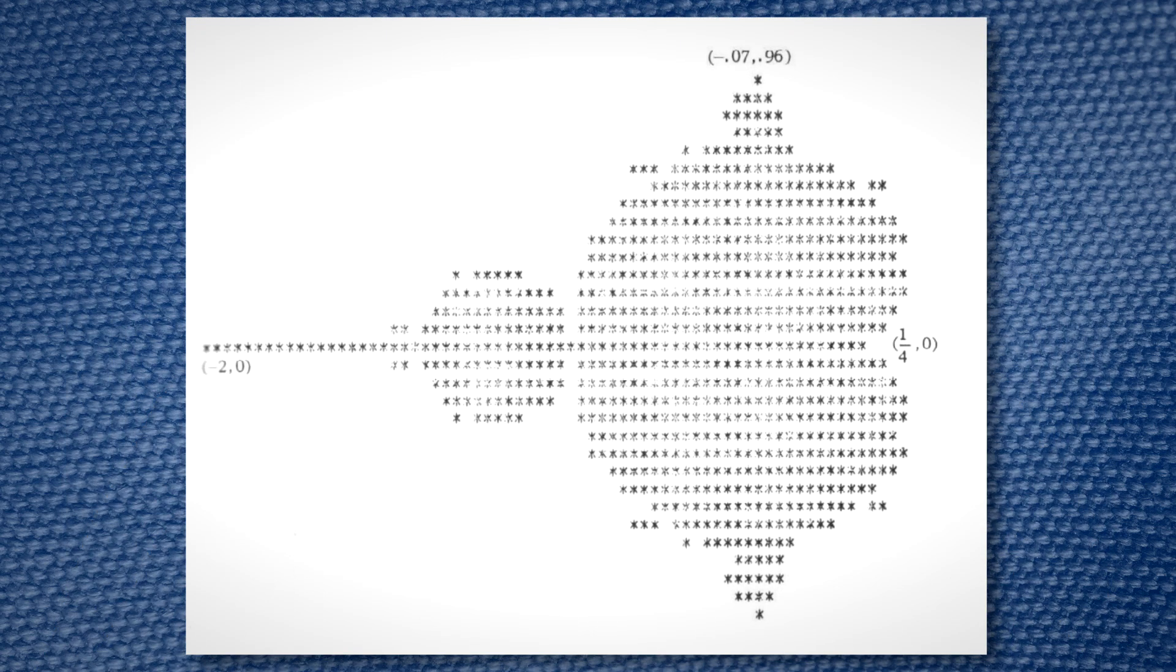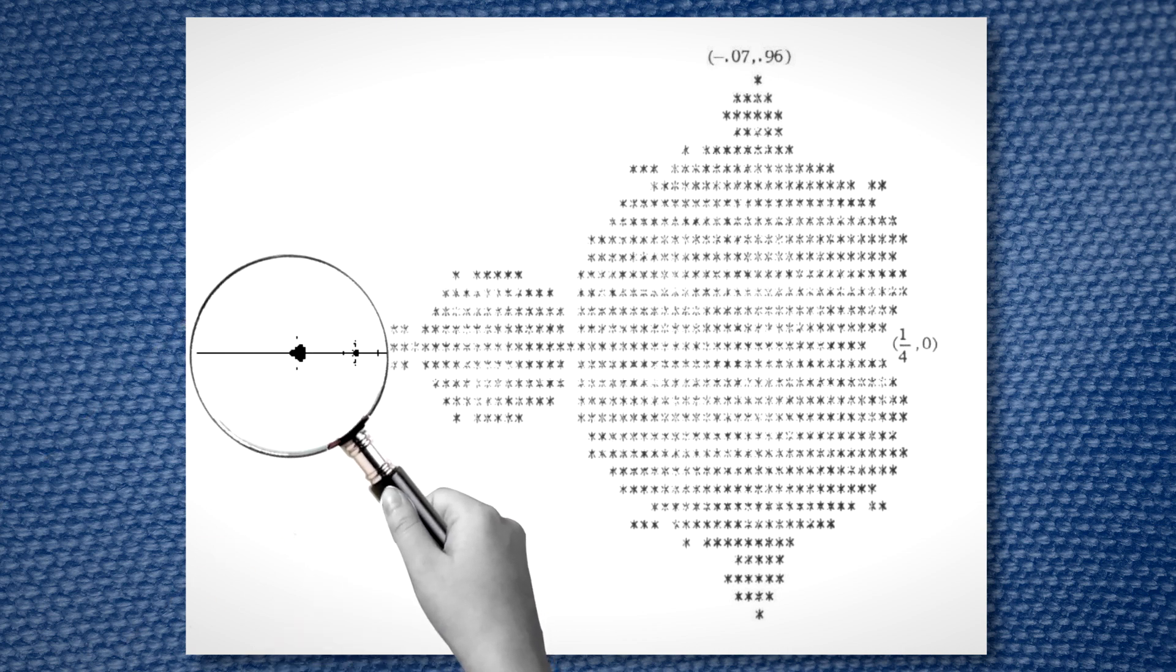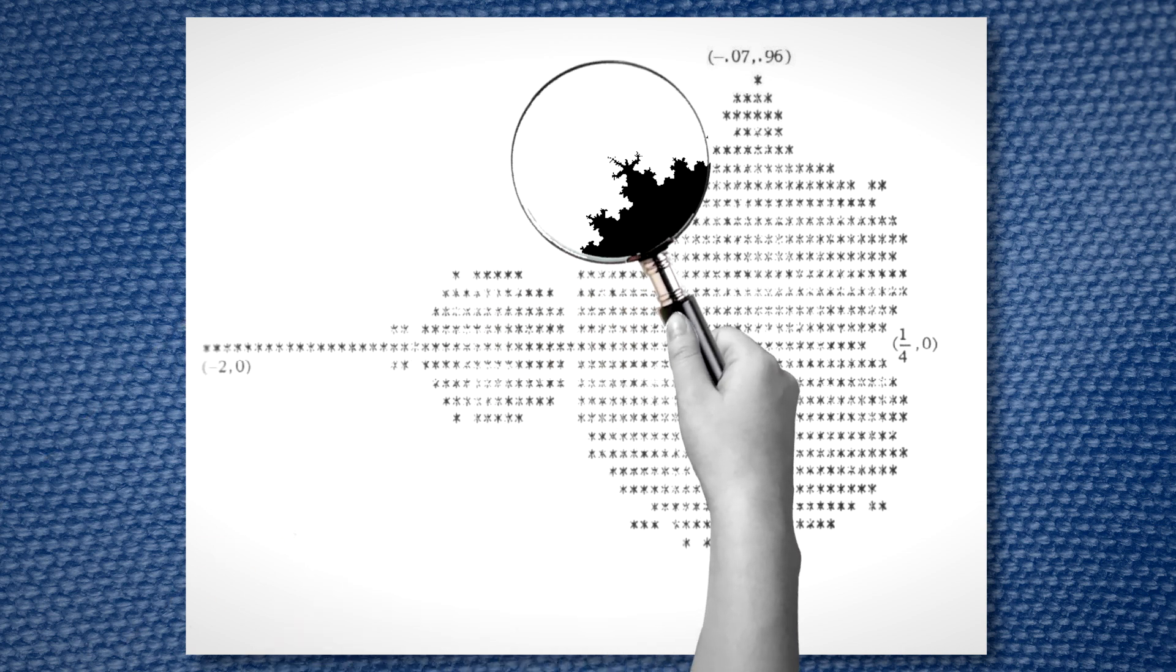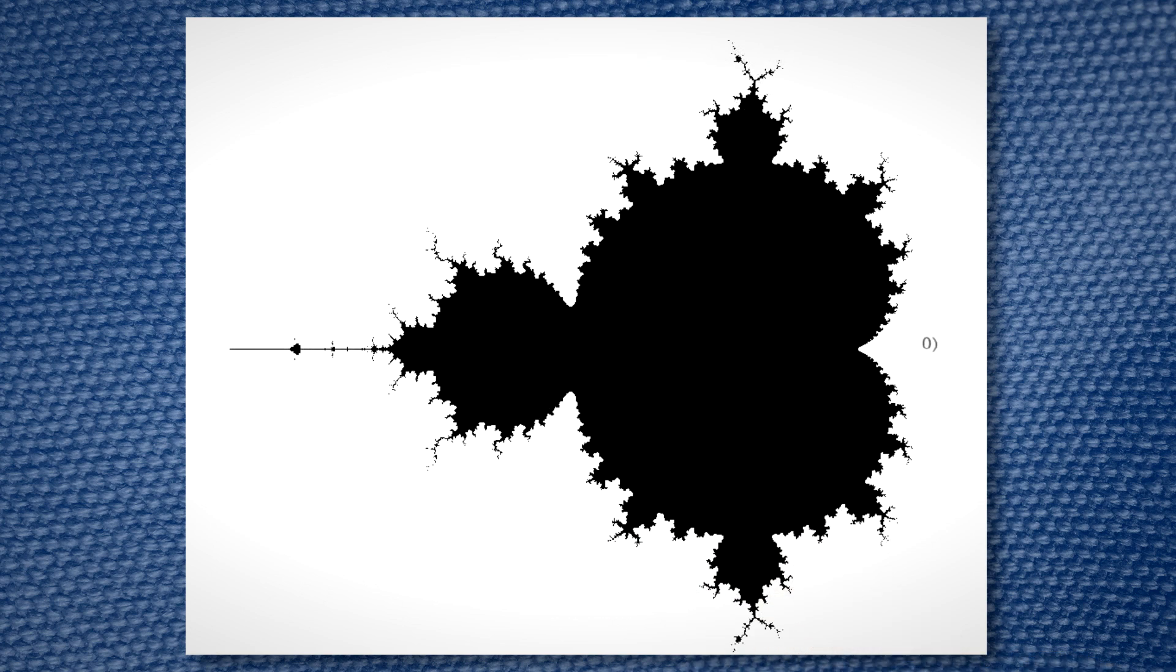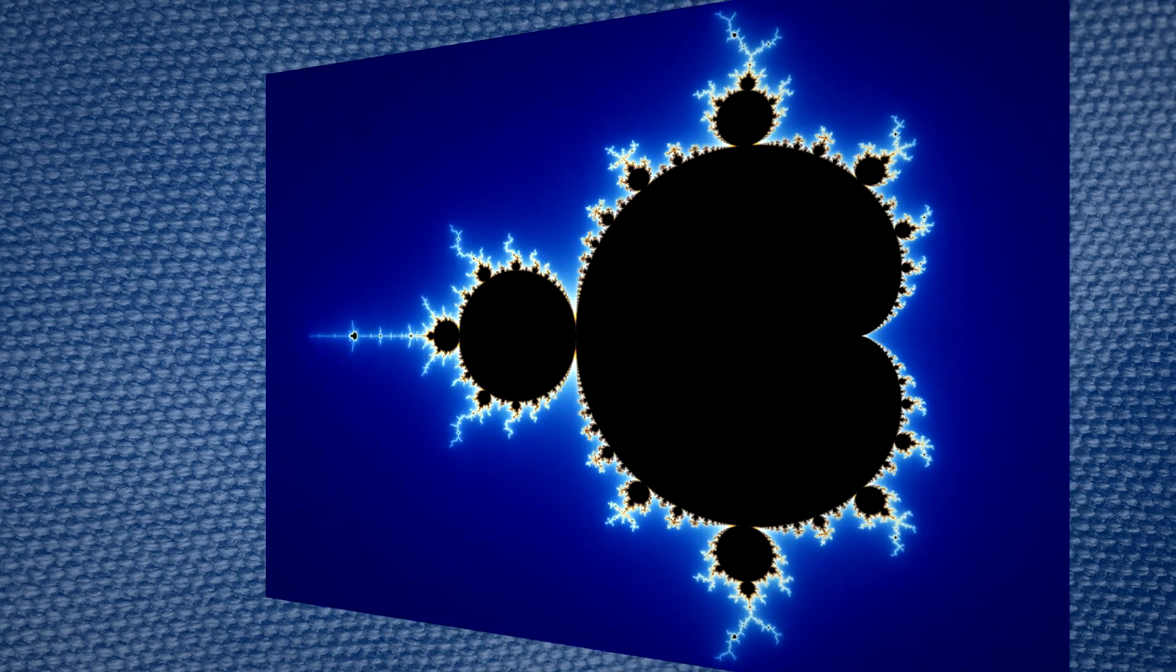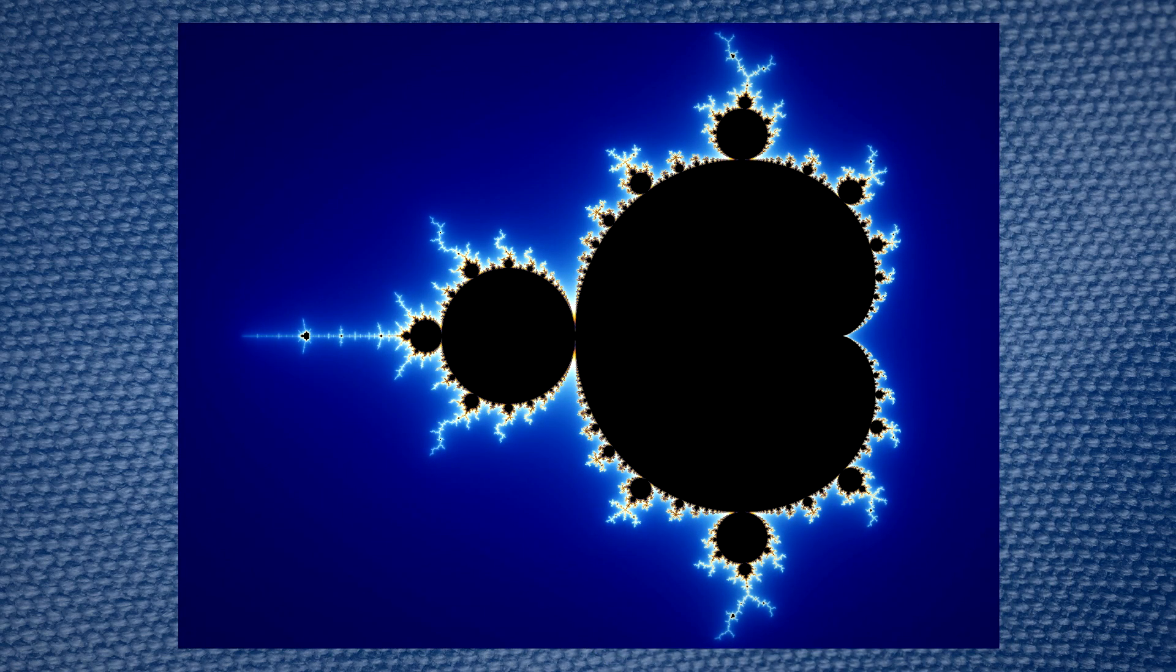At the time, Mandelbrot had no way of knowing that this dot right here was another mini Mandelbrot, or that the edges contained infinitely complex spirals and patterns. But as technology improved and more complex numbers were sent through the iteration, we have been able to generate the current, more detailed Mandelbrot set.